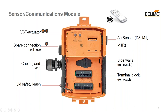There's also a safety leash for the lid, so the last thing you want is to be 20 feet up in the air on a ladder and drop the lid and have to go back down to pick it up just to seal off the product. So that's another nice little feature. And up here is where the delta P sensor is — the differential pressure sensor, whether it's the D3, M1, or M1R, it is always in this location.